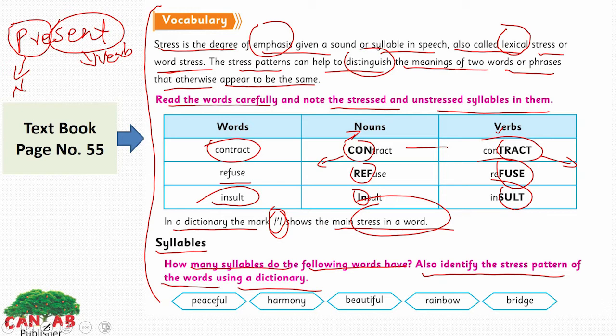For example, 're' is a syllable and 'fuse' is a syllable in 'refuse.' In 'insult,' 'in' is a syllable and 'sult' is a syllable. You have to identify whether the stress falls on the noun syllable or the verb syllable. Your practice words are: peaceful, harmony, beautiful, rainbow, and bridge.